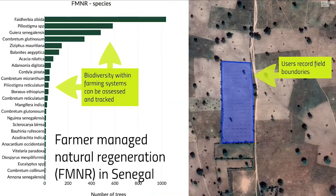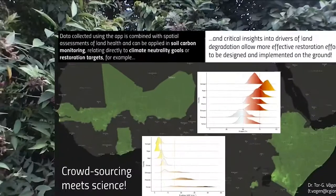Also, when it comes to farmer managed natural regeneration or FMNR, we can track biodiversity within these farming systems. We also record the field boundaries, which you can see on the right, giving us a spatial assessment of where these interventions are going in.